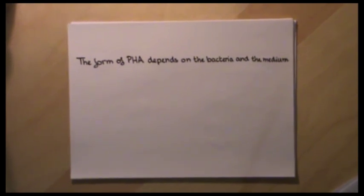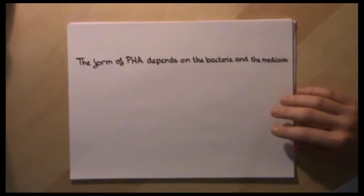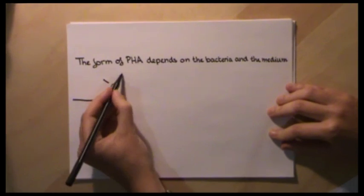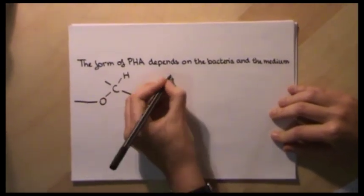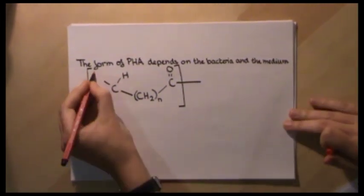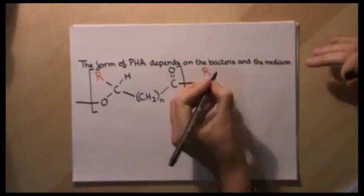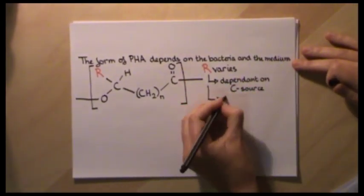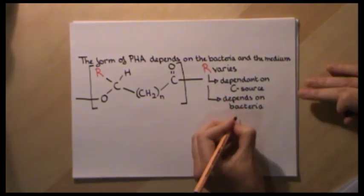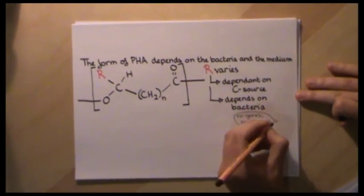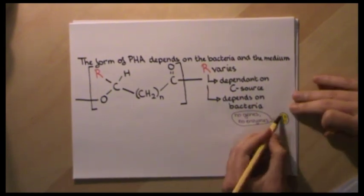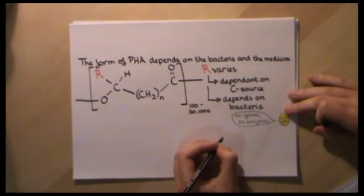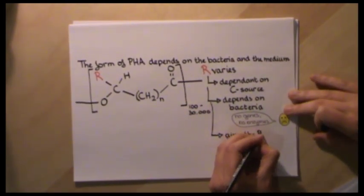Let's take a look at the main building block of PHA. It looks like this. And the pendant, or R group, varies depending on the medium available and, of course, the genes of the bacteria. The pendant group also makes the PHA have different traits.